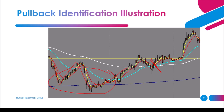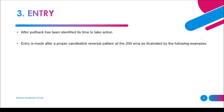With the peak locked, we are now in preparation to find a pullback. This pullback is only valid if it comes after the crossover. Then the last part is entry — we prepare ourselves to get into the trade. After the pullback has been identified, it's time to take action. Entry is made after a proper candlestick reversal pattern at the 200 EMA, as illustrated by the following examples.